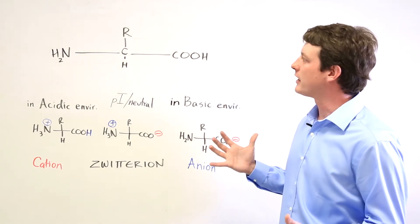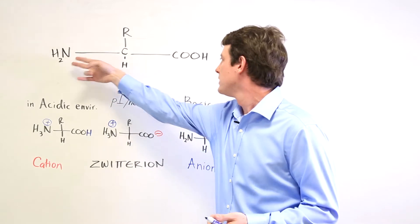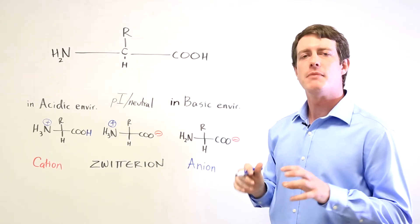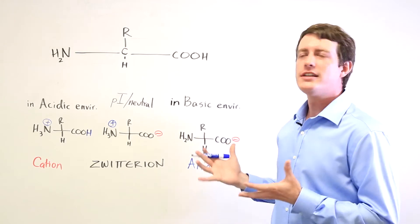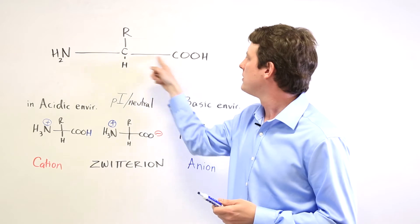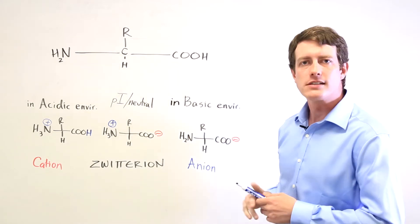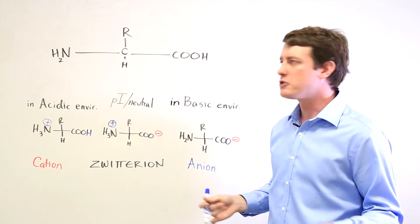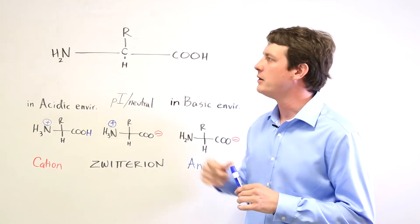The reason they're called amino acids is because they have an amino group attached to a carboxylic acid and you may hear the term alpha amino acid. All that means is that the amino group is attached to the alpha carbon of this carboxylic acid. All of the human amino acids that you'll be encountering are going to be alpha amino acids.